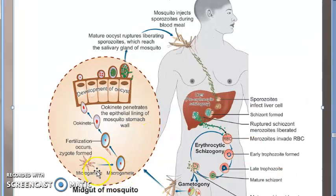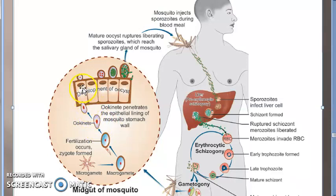So the macro gamete and micro gamete fuse and become an ookinete. This ookinete has motility and an apical complex, which is why it is able to penetrate the epithelial lining of the mosquito's stomach wall. It then lies beneath the basement membrane.